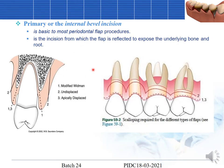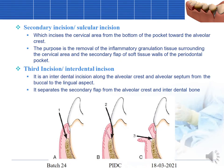For the primary or internal bevel incision, in the modified Widman flap and the apically displaced flap, the first incision is placed 0.5 to 1 mm away from the marginal gingival margin. For the undisplaced flap, it is placed a little further away — below the marginal level of the periodontal pocket.